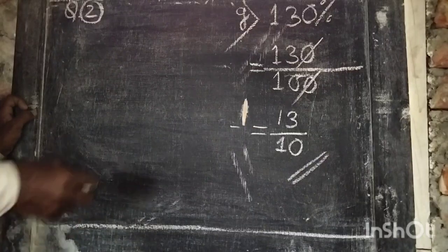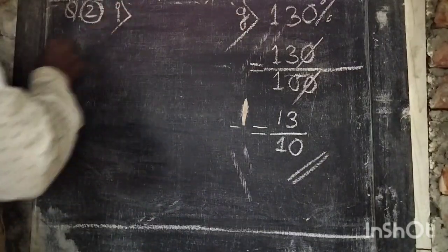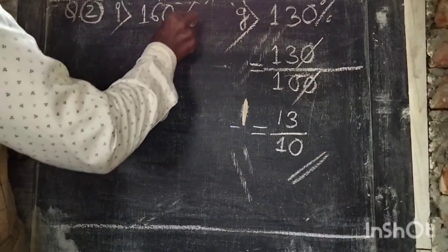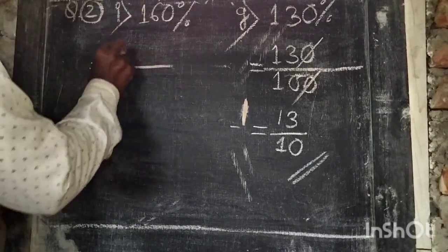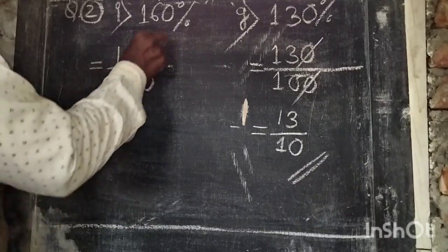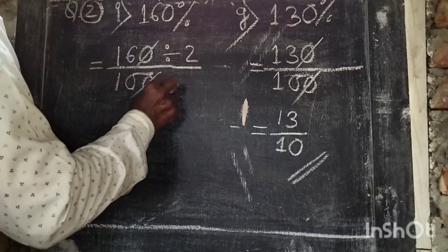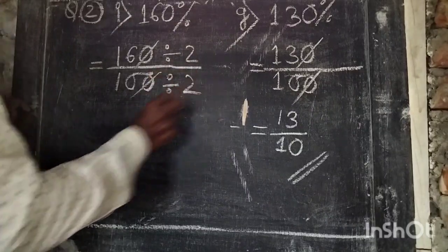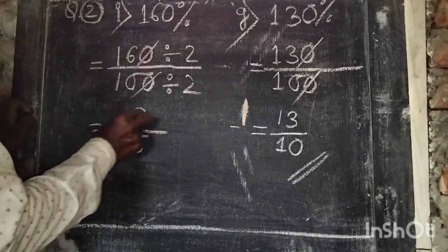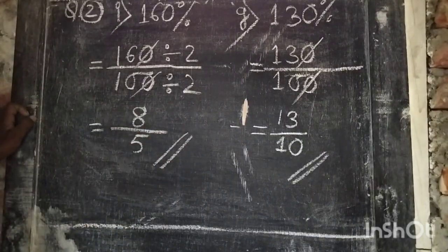Part I: 160 percent — write as 160 divided by 100. Cancelling one zero and dividing by 2, we get 8 by 5 as the simplest form.